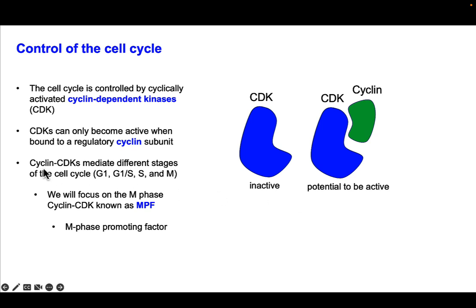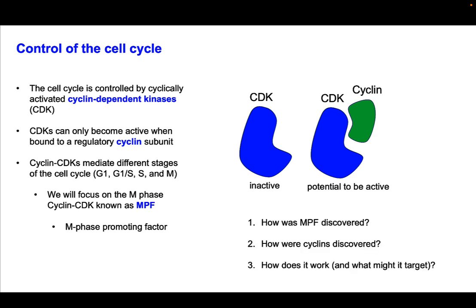There are different CDK-cyclin pairs that mediate the different stages of the cell cycle — pairs that mediate G1, G1 to S, S, and M phase. For most of this lecture, I'm going to focus on the M-phase cyclin CDKs known as MPF, or M-phase promoting factor. I'll first tell you how MPF was discovered, then how the cyclins were discovered, and finally how cyclins and CDKs work together and what CDKs target once activated.